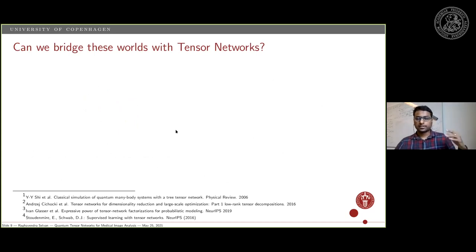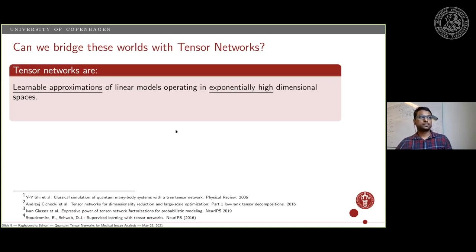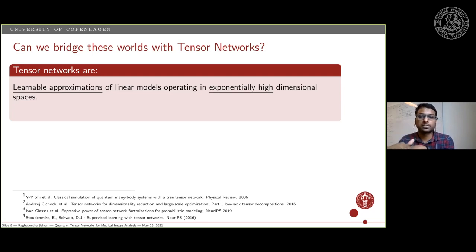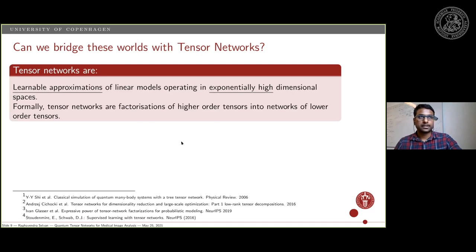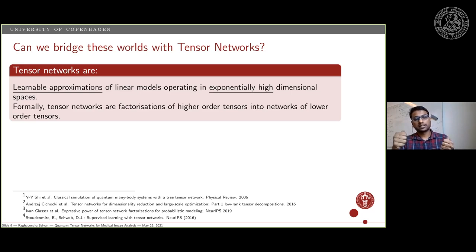So what are tensor networks basically? At a very high level, tensor networks are approximations of linear models in exponentially high dimensional spaces. Think of it as the simple example I showed, but instead of going from 2D to 3D, you might go from 2D to a really high dimensional space, and then try to approximate linear decision boundaries there. In a more formal sense, they are factorizations of higher order tensors — transforming factorizations of higher order tensors into lower order tensors so that we can work with them.